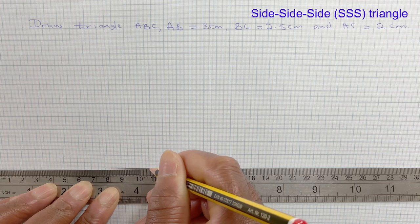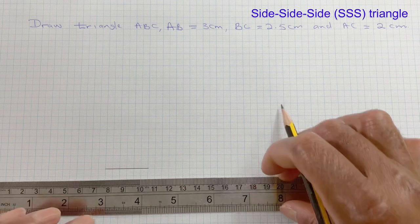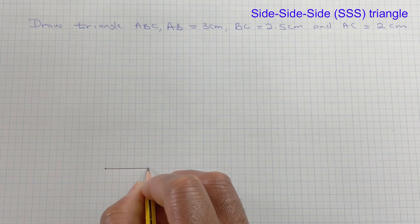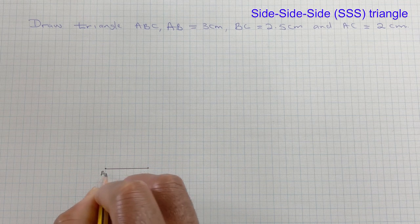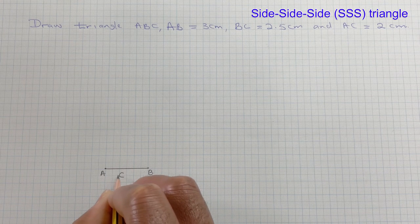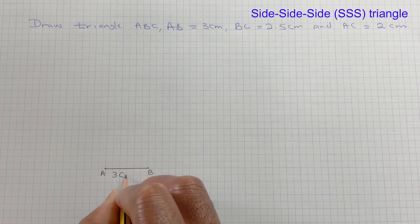Note the point here, so that's A and B, and that's 3 cm.